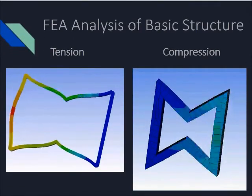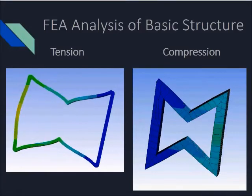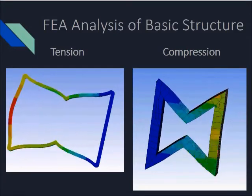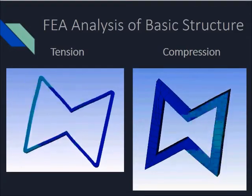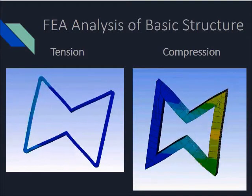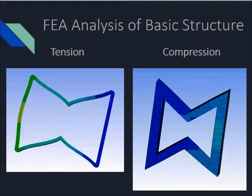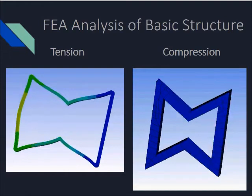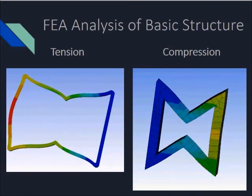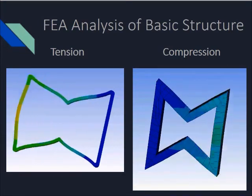Analysis of an auxetic hourglass structure. Notice, on the left, there is a tension deformation, on the right, a compression deformation. The changing colors represent how the deformation is changing. The deformation in this structure is consistent with a negative Poisson's ratio material.